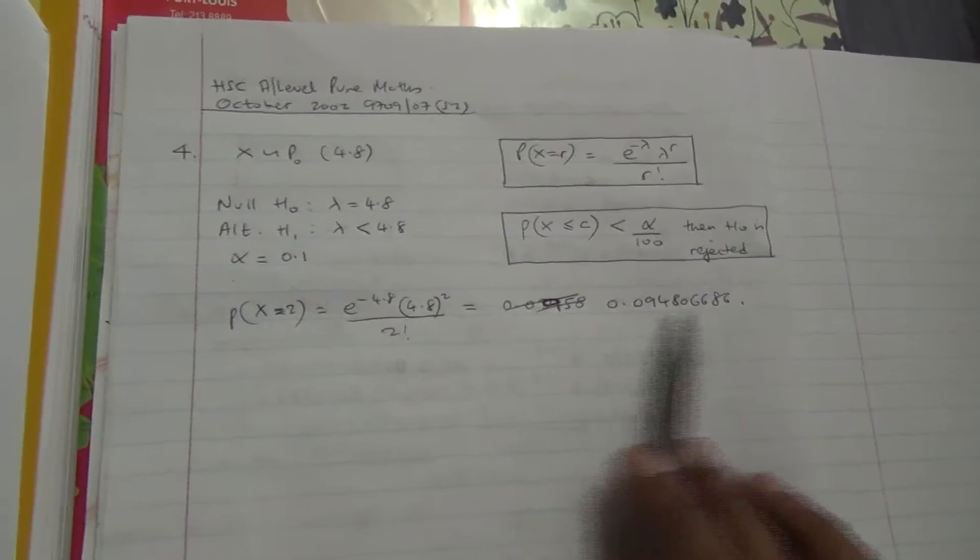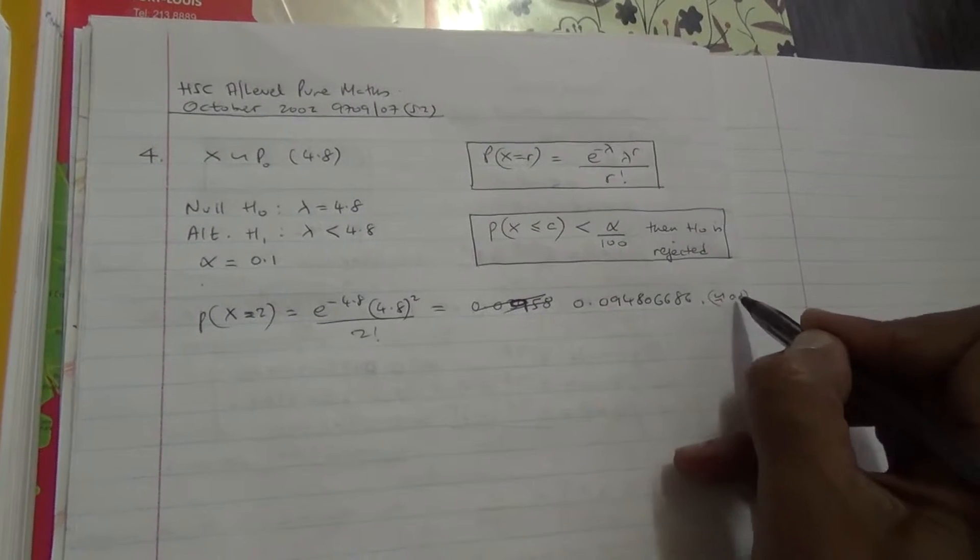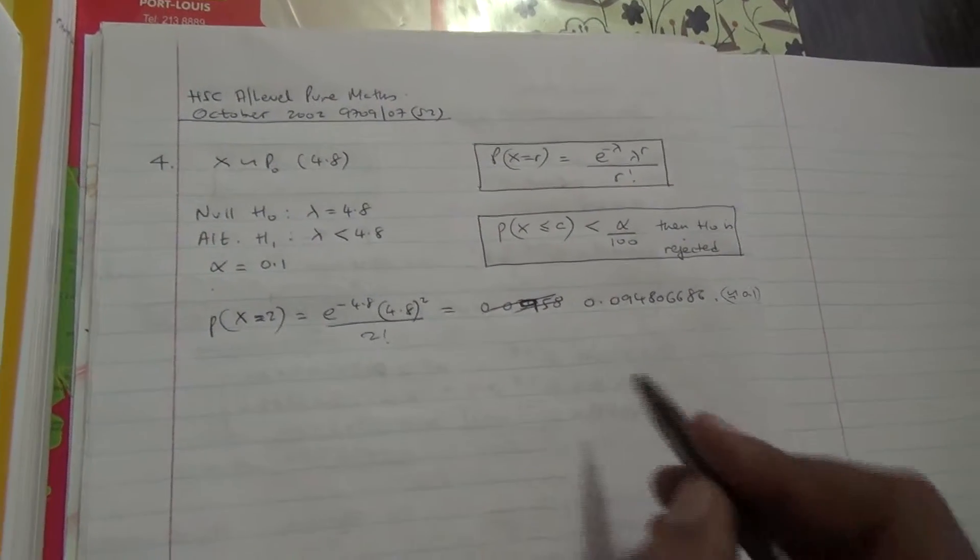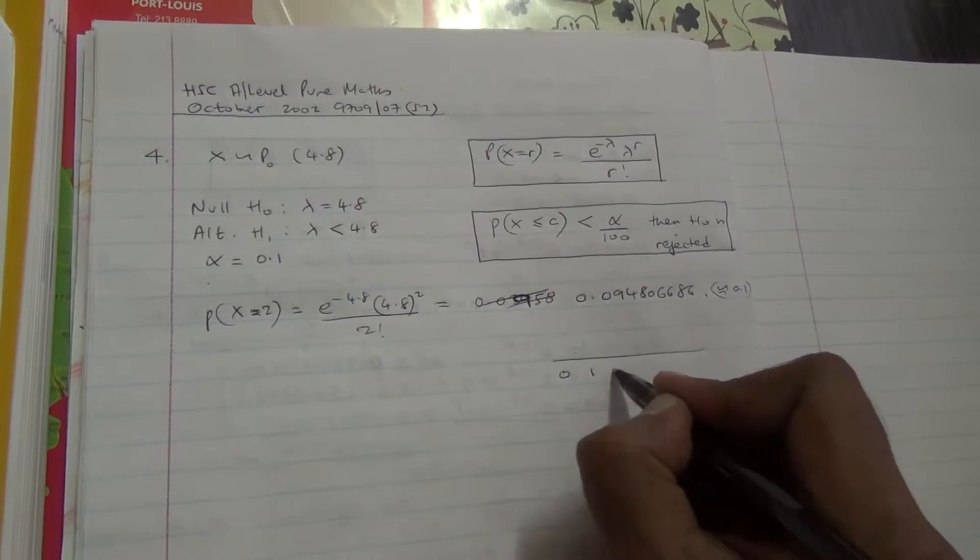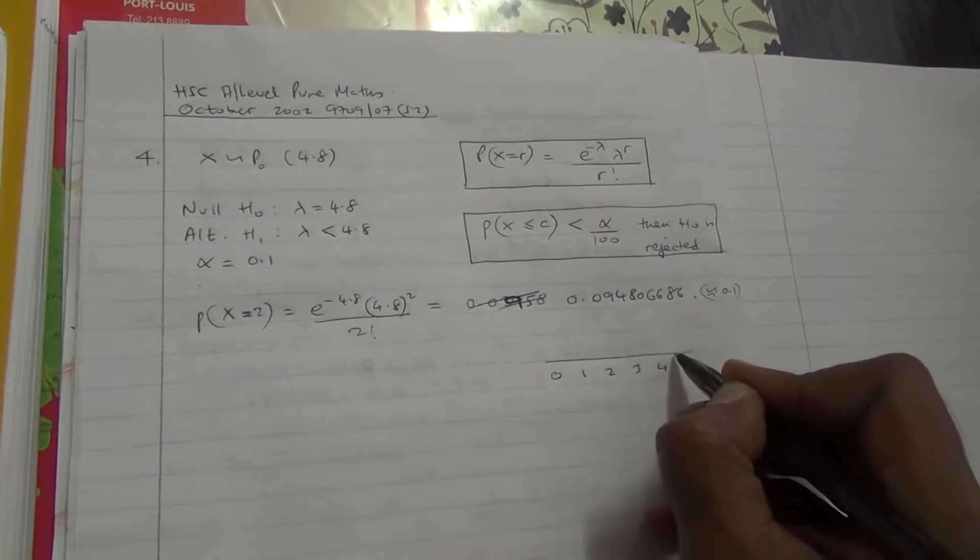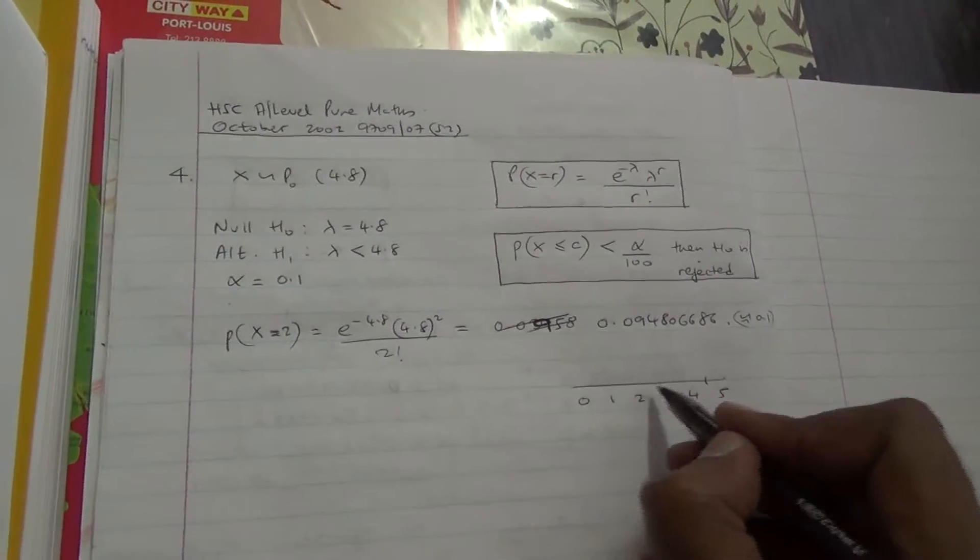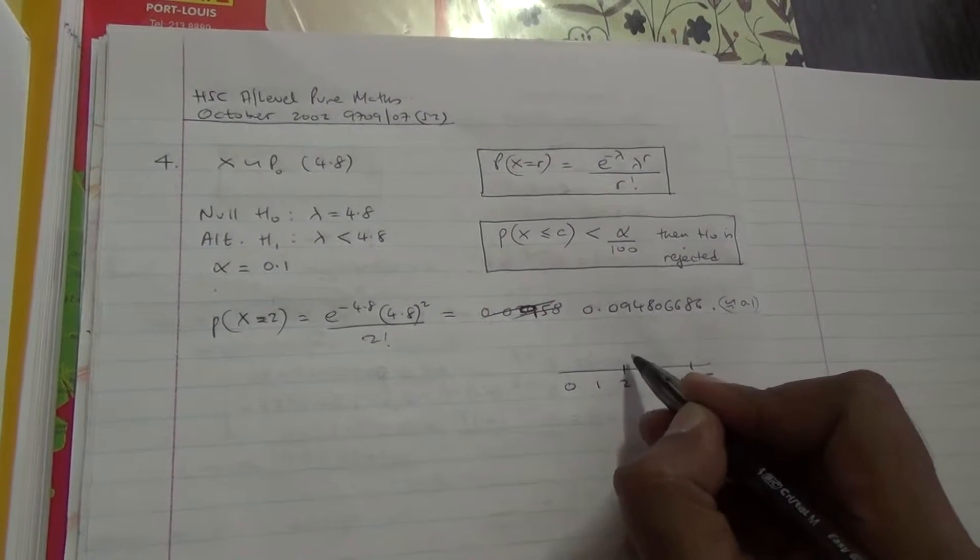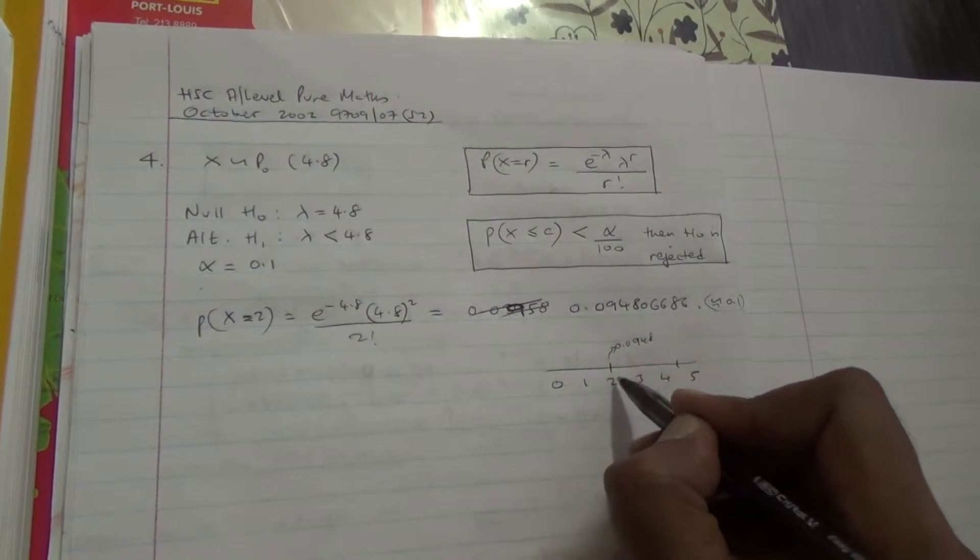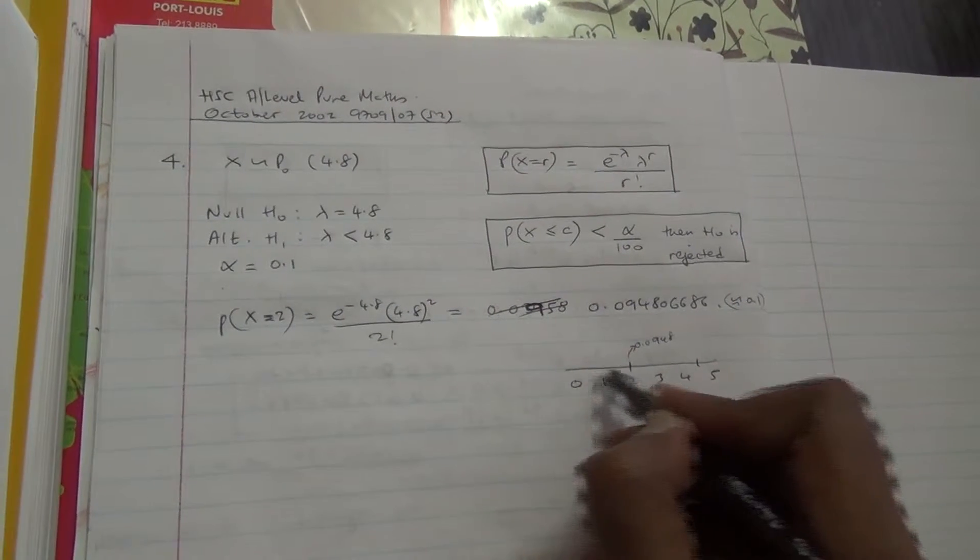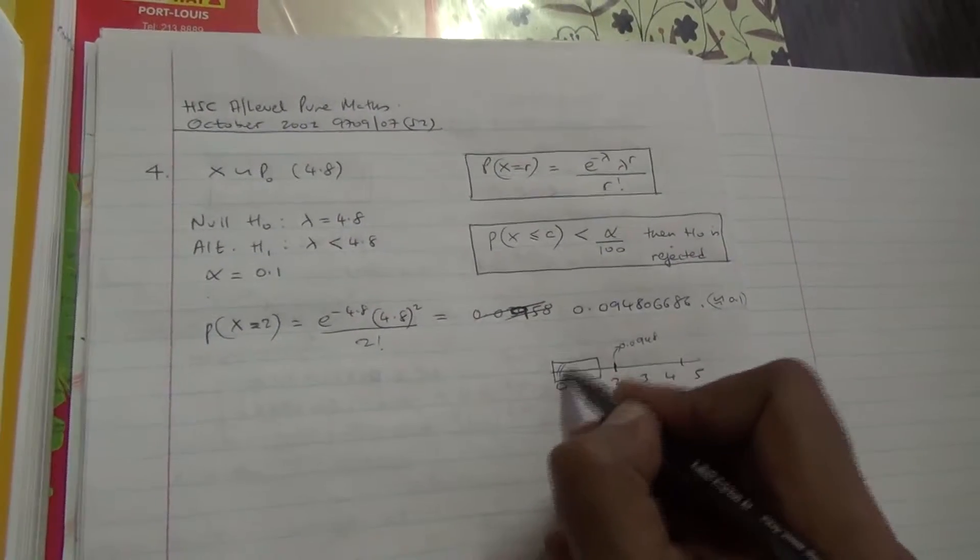Now, what do we make out of this? This is almost like 0.1. So what it means that if we have to look at where the critical region is, we have 0 accident, 1, 2, 3, 4, 5, and so on, 4.8 accidents occurring every month. But if 2 accidents occurring, and the probability is going to be here. So this is like saying the probability here carries 0.0948. This is almost like 0.1. So the critical region will be then below this 2. So the critical region will be 0 and 1.